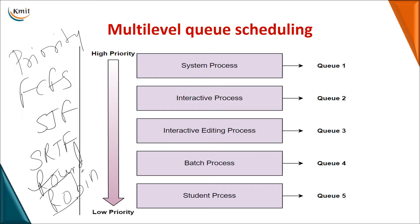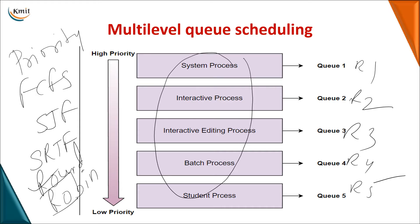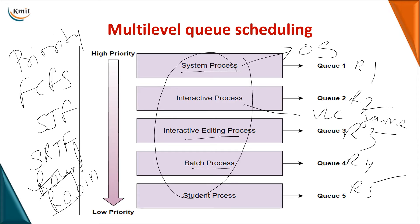Now for multi-level queue scheduling: until now we have seen only one ready queue, but you may need different ready queues. Processes are divided based on functionality into queues: system processes, interactive processes such as VLC or games, interactive editing with compilers, batch processes, and normal programs like student processes. Each category is given its own separate queue.